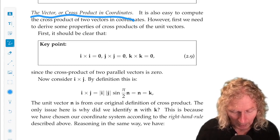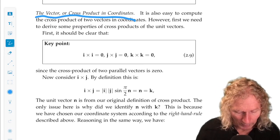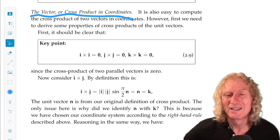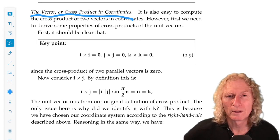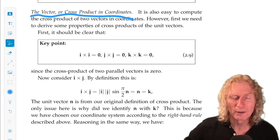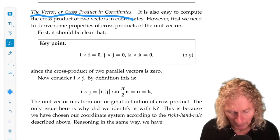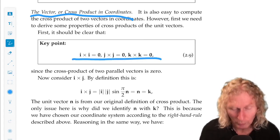So any vector, the cross product of any vector with itself is zero. So that's this point to keep in mind here.